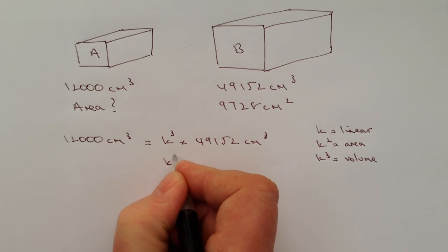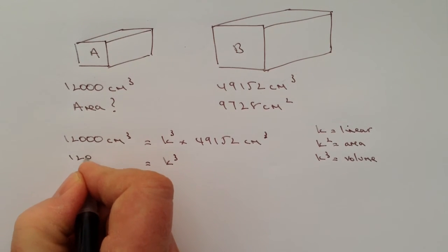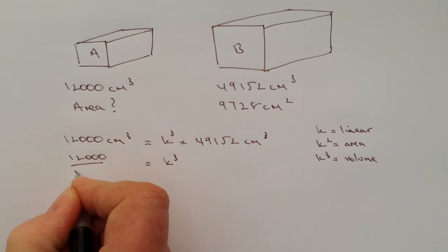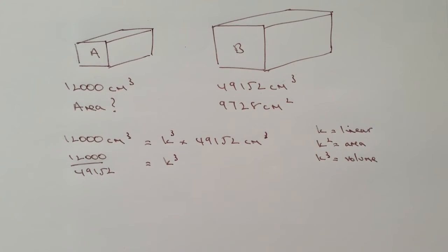K cubed equals 12,000 divided by 49,152, and then if you take that, put it into a calculator and work out the cube root, so effectively we're looking at 12,000 over 49,152 and we want the cube root of that, and that will give us the value of K.